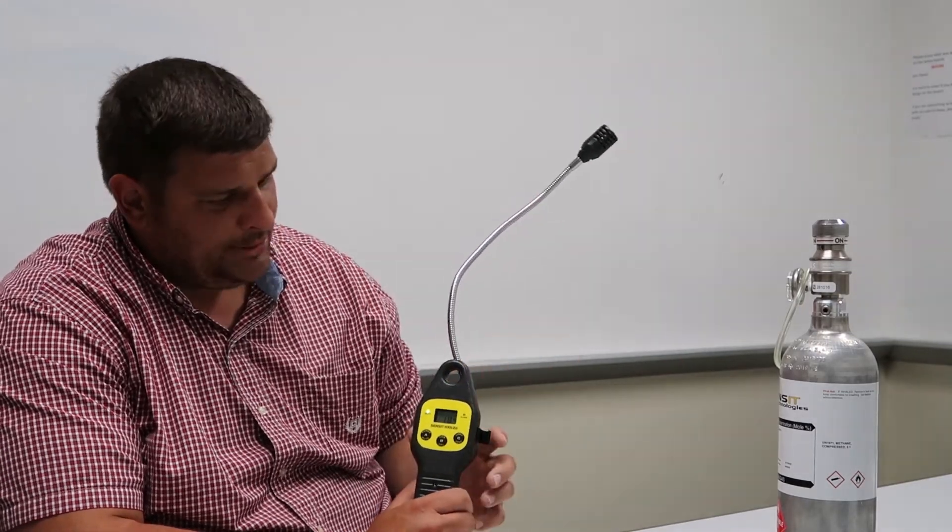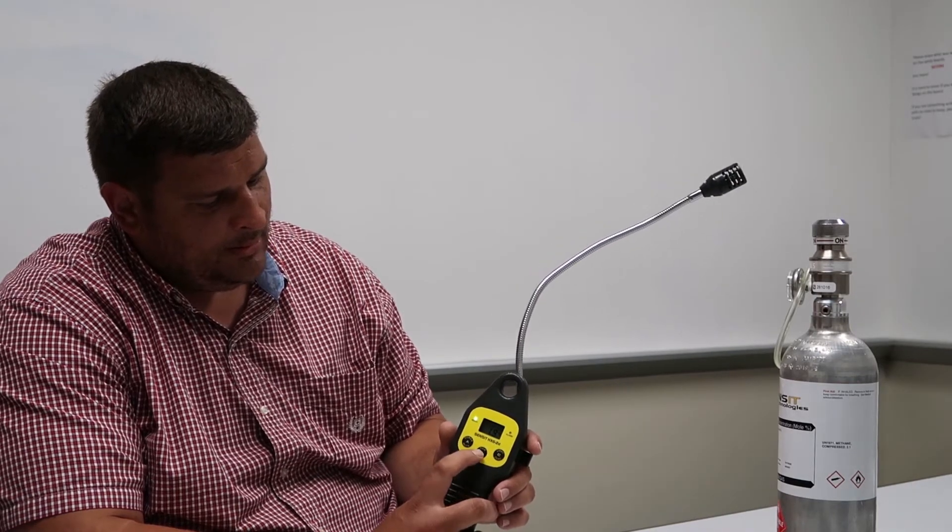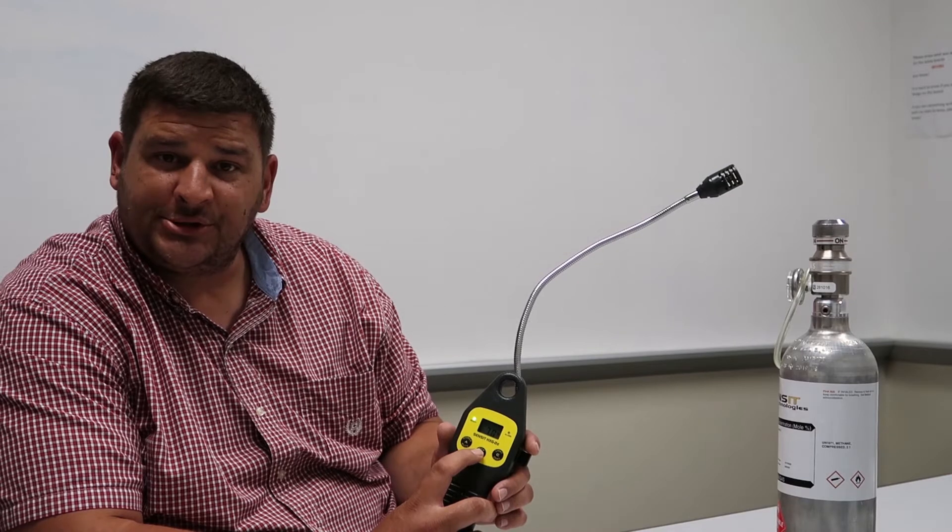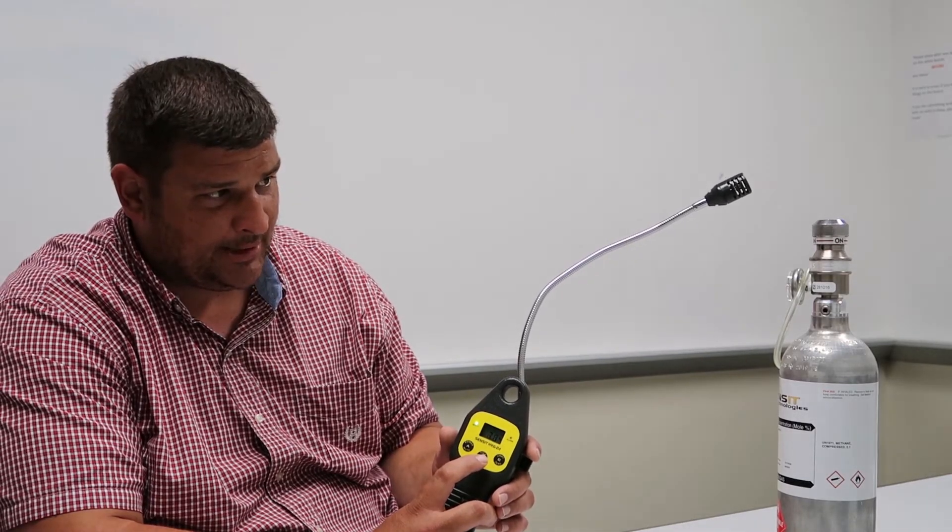As you get closer to your leak source, the tick will speed up. At any point when the tick goes to a solid tone, press the B button to reset the tick to a steady two to three ticks per second again.